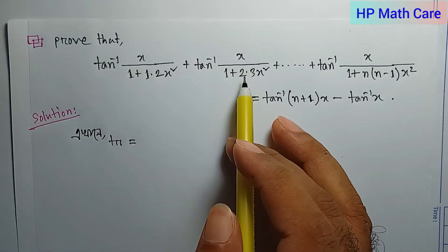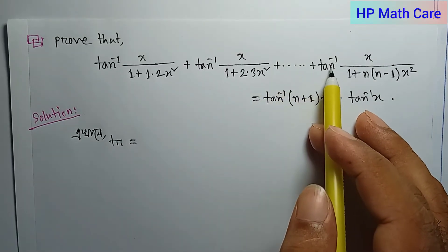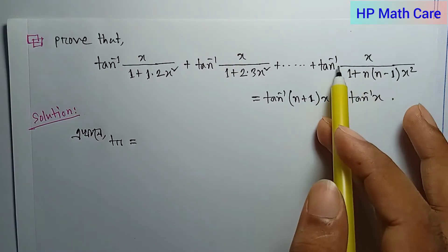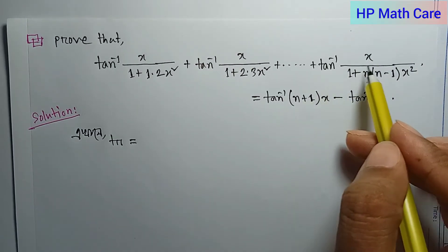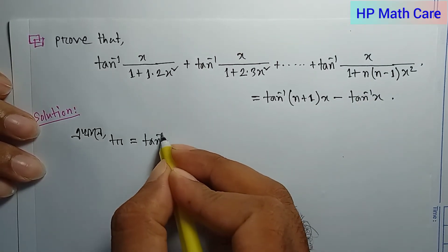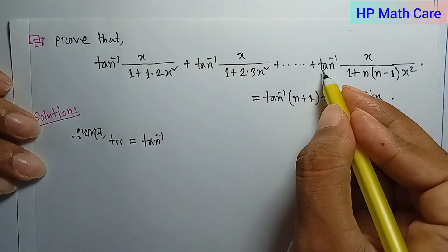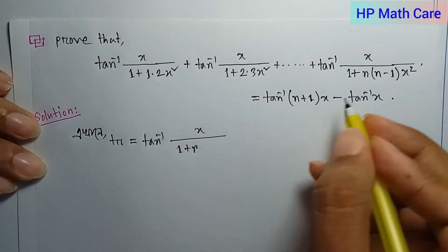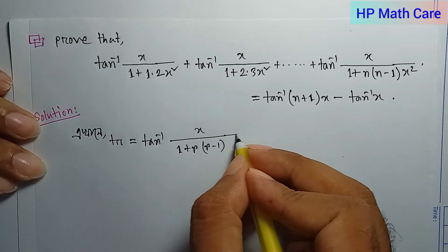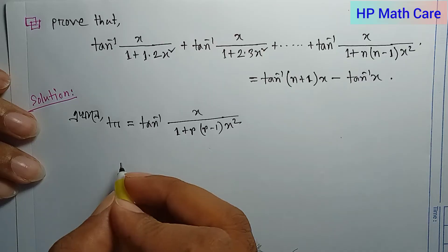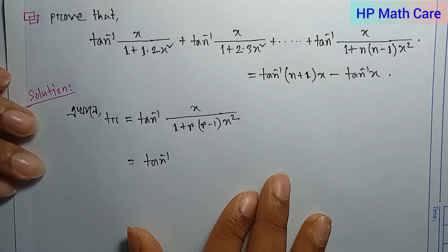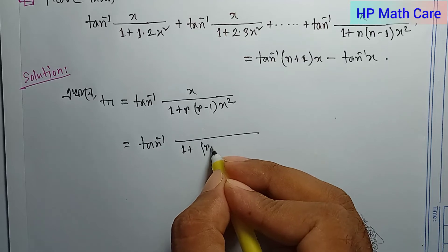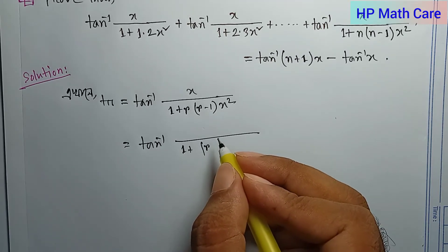The problem is to prove that: tan⁻¹(x / (1 + 1·2·x²)) plus tan⁻¹(x / (1 + 2·3·x²)) plus up to tan⁻¹(x / (1 + n(n+1)·x²)) equals a given expression. We choose the r-th term as tan⁻¹(x / (1 + r(r+1)·x²)).